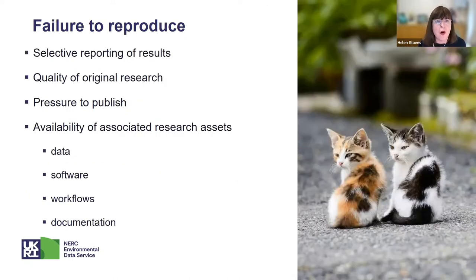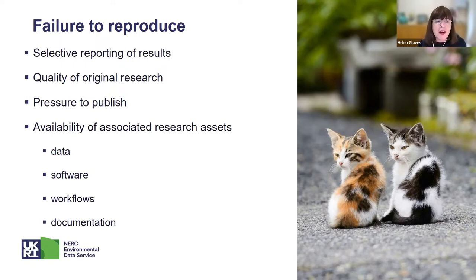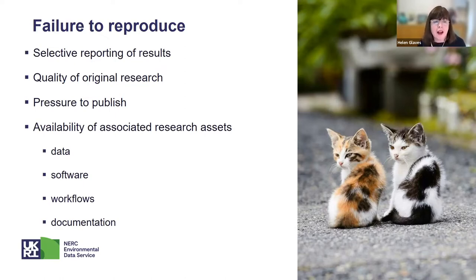There has been a lot of work to understand what causes this failure to reproduce research. Part of it is around the way we report our research — we selectively report results through journal publications. There's also the quality of the original research, and the pressure to publish results as quickly as possible. But fundamentally, the failure to reproduce is about the availability of associated research assets — data, software, workflows, documentation — without which it's almost impossible to reproduce an experimental result.